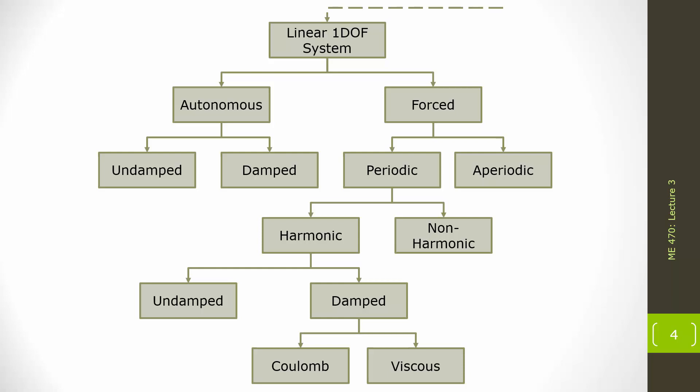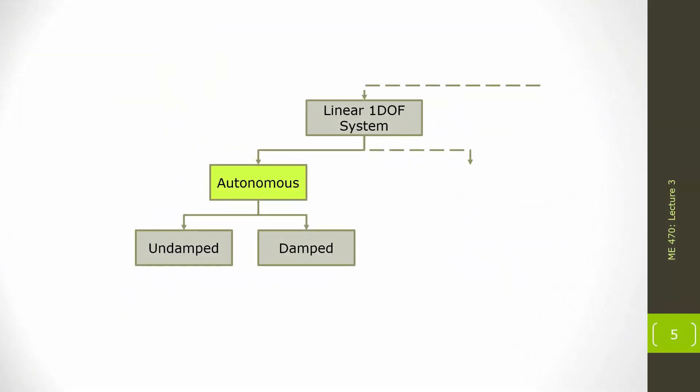In linear one degree of freedom systems, we can have autonomous or free vibrations — which we're talking about now — or forced vibrations, which we'll cover in the next section. In both categories we could have damping or no damping. When we have forcing, there are many different types: is it periodic or aperiodic? We'll save that for the next section. So zooming in to what we're interested in for this section: just the undamped and damped autonomous systems.